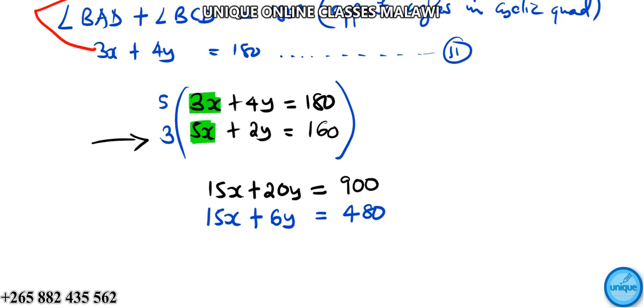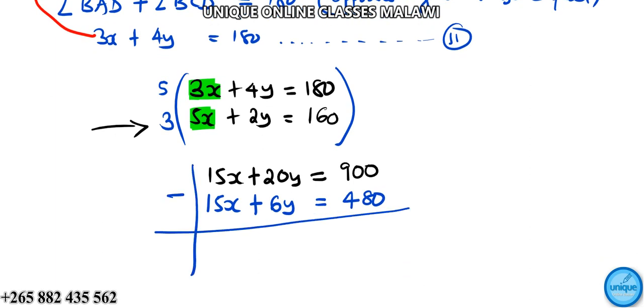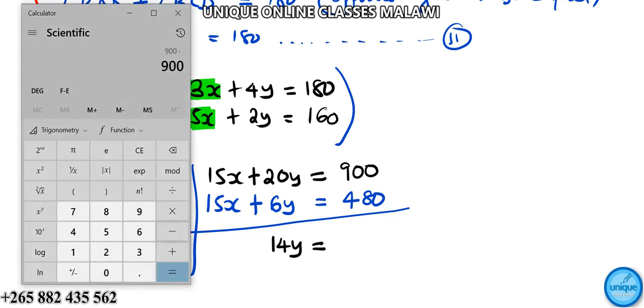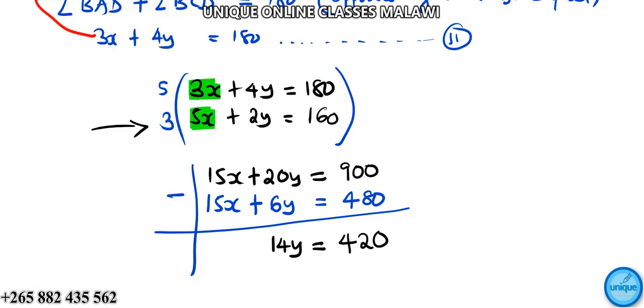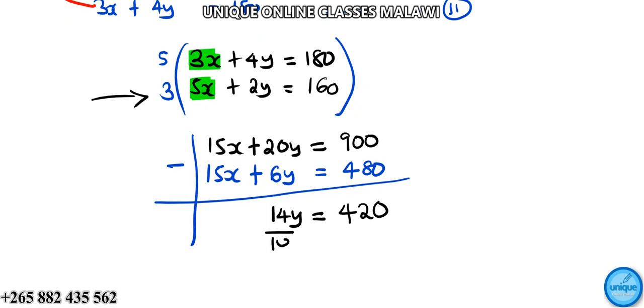Subtracting the equations, 15x cancels out. We have 20y minus 6y equals 14y, and 900 minus 480 equals 420. So 14y equals 420. Dividing both sides by 14, we get y equals 30.